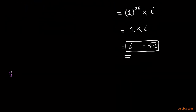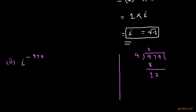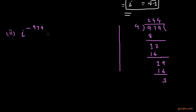In the second part we are given the expression iota raised to negative 979. First of all we shall divide 979 by 4. Performing the long division, 4 goes into 9 twice, bring down 7 — 4 goes 4 times, bring down 9 — 4 goes 4 times. Finally the remainder is 3. So we can write this value as 1 over iota raised to positive 979.